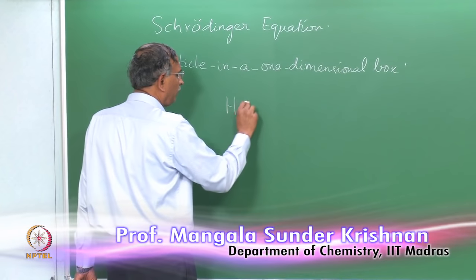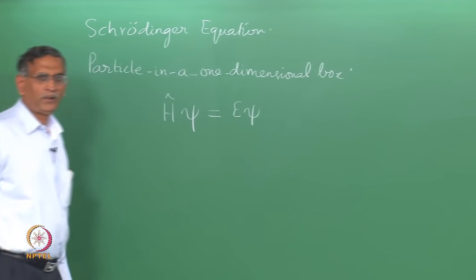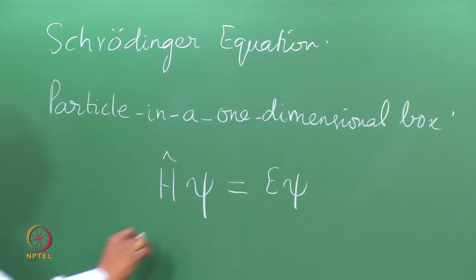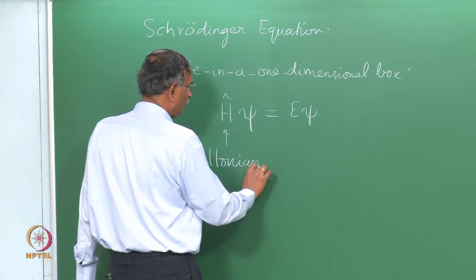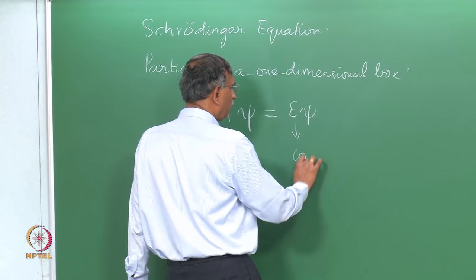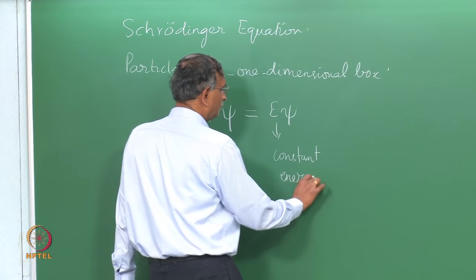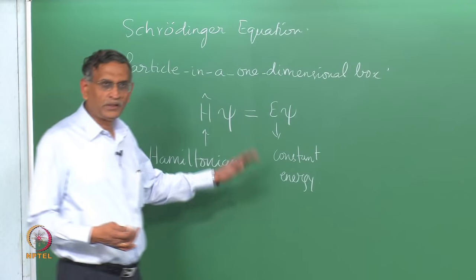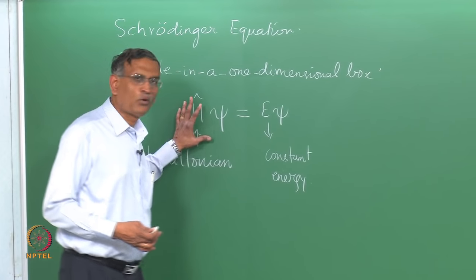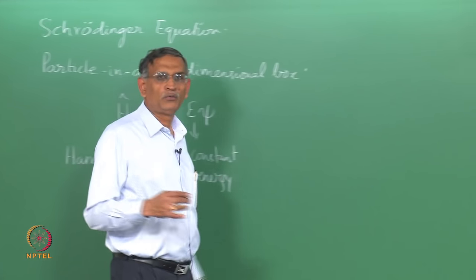In the earlier lecture I mentioned that I would be talking about the time-independent Schrödinger equation, in which this quantity was referred to as the Hamiltonian, and this is a constant with dimensions of energy. The function psi is the function that we wanted to find out by solving an equation of this sort, but we do not know what this is right now — we have to introduce that to understand how this equation comes about.